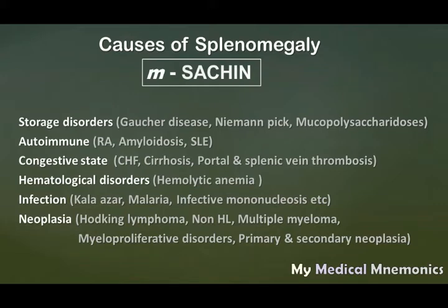Autoimmune disorders like rheumatoid arthritis, systemic lupus erythematosus, and amyloidosis will also cause splenomegaly. One important cause is congestive splenomegaly, which is mainly due to portal hypertension. Causes include congestive heart failure, cirrhosis, and portal or splenic vein thrombosis.